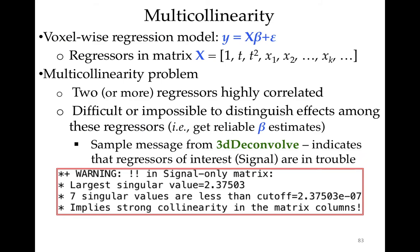I have a voxel-wise regression model, and an issue that can arise is what's called multicollinearity, where we have two or more regressors highly correlated. If this happens, it's very difficult to distinguish effects among these regressors — that is, get reliable beta estimates for two regressors that are close to being the same. A sample error message indicates that the regressors of interest signal are in trouble. The program will print out regressor messages in the signal sub-matrix, in the noise-only sub-matrix, and in the entire matrix. The purpose of these checks is to warn you about multicollinearity.